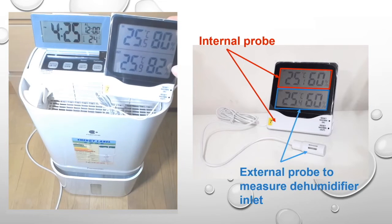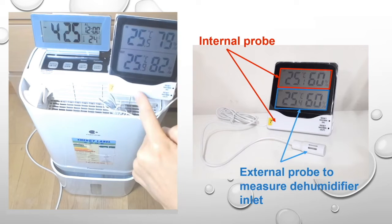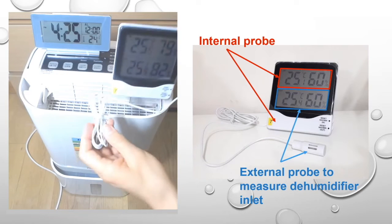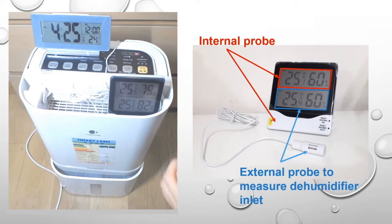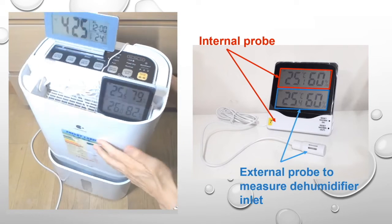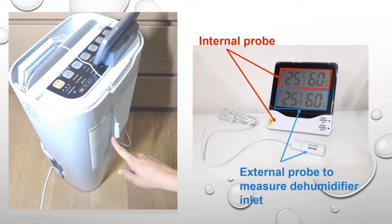First, I put the sensor at the inlet of the dehumidifier, so the internal probe can measure the condition of air of the outlet. We can then extend the external probe so that it will measure the inlet temperature and relative humidity.